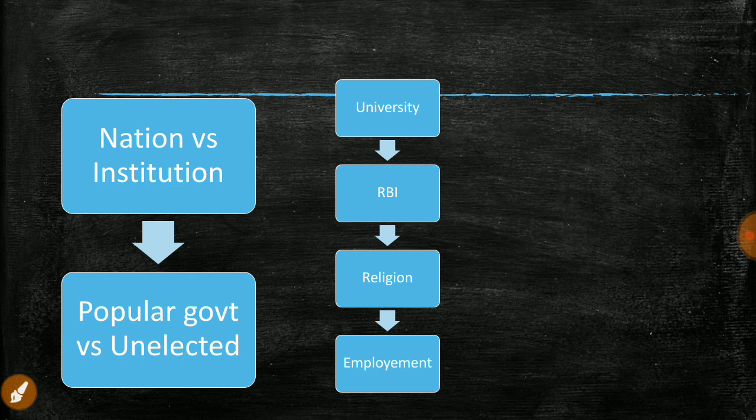The government is also interfering in matters of religion — the Sabarimala case — and employment. In Gujarat, an executive order was issued saying 80% of recruits must be native. These anti-migrant sentiments are similar to what led to Brexit, happening on 29th March 2019. If you stop migrants from entering your state or country, the labor market gets influenced and investment may also be affected — you need to understand this before becoming anti-immigrant.